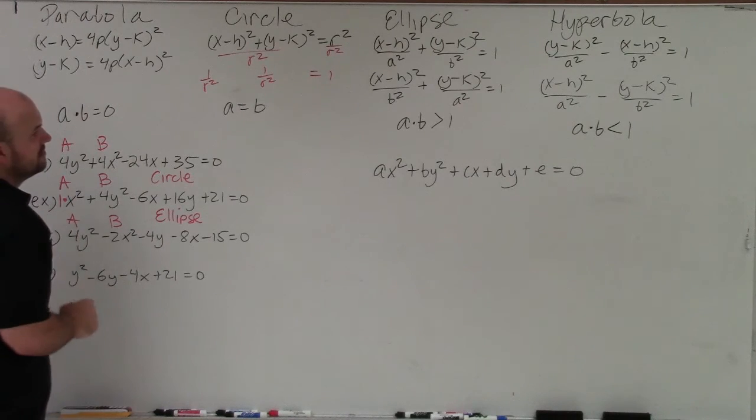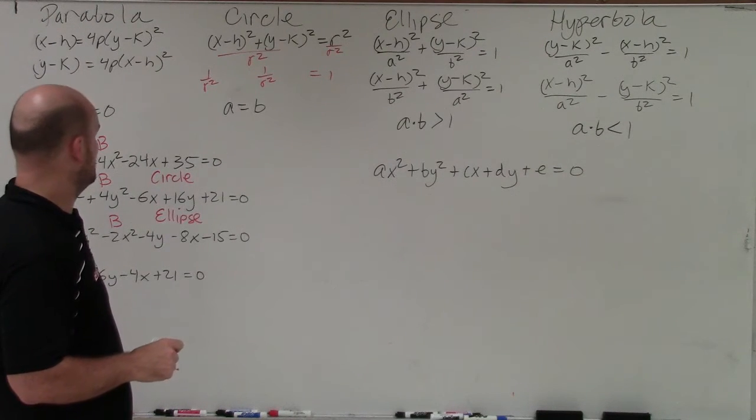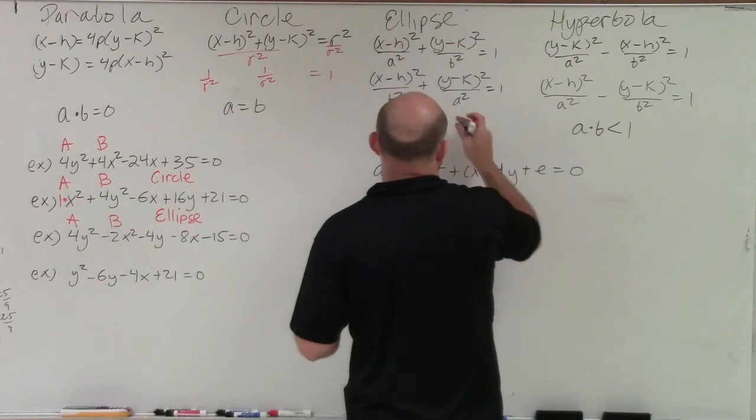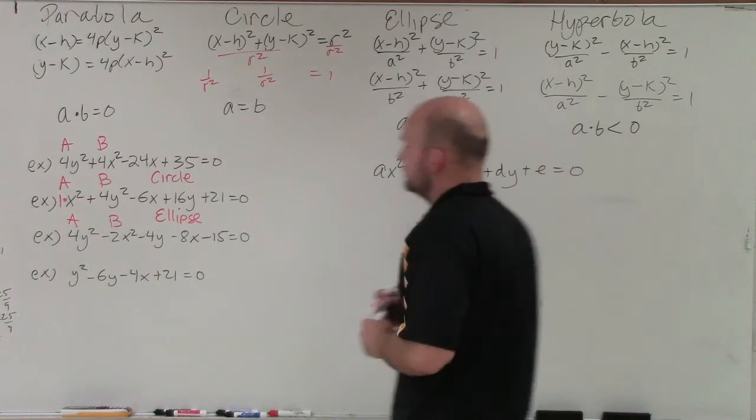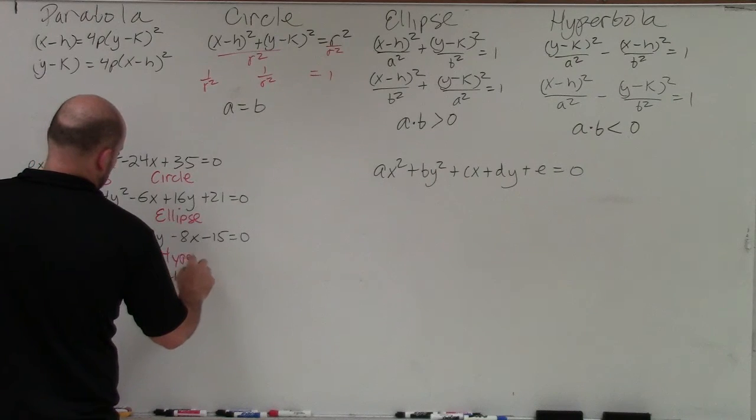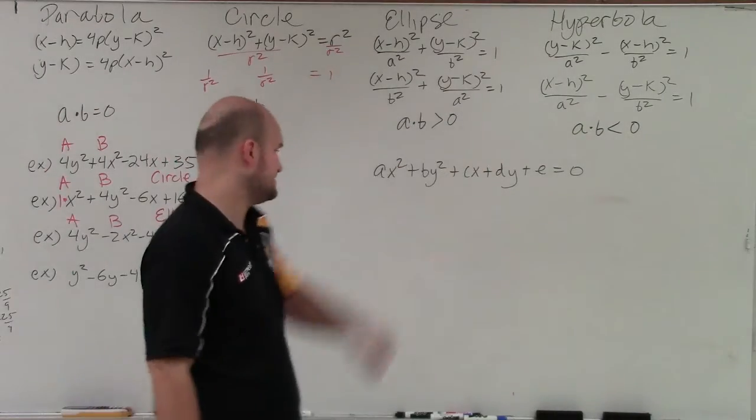Oh, that's greater than 0. I don't know where 1 came from. So that's going to give me a hyperbola, because 4 times negative 2 is negative 8. Negative 8 is less than 0.